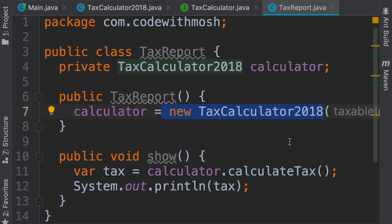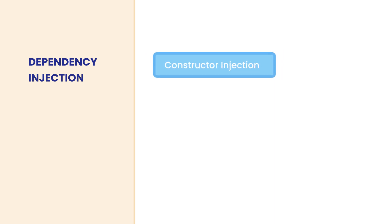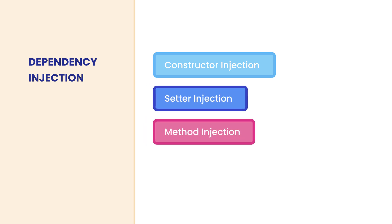So that other class will pass or inject a dependency. Now, we have various ways to inject these dependencies. We can use constructor injection, so we can pass a dependency via the constructor of a class. We can also pass a dependency via a setter or a regular method. Over the next few videos, we're going to explore each of these approaches and their pros and cons.